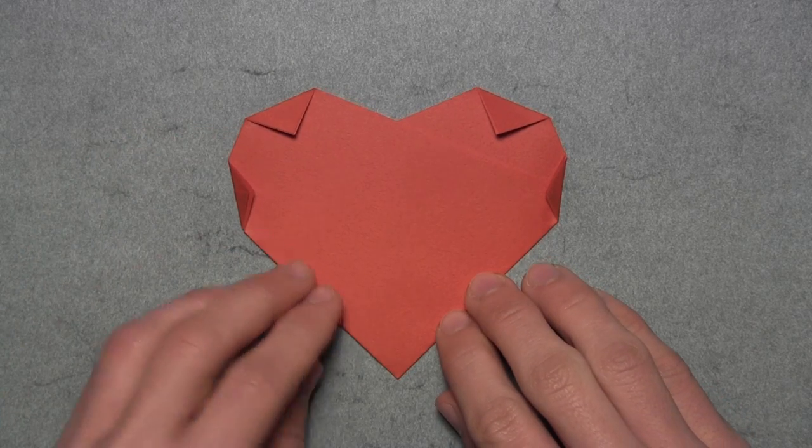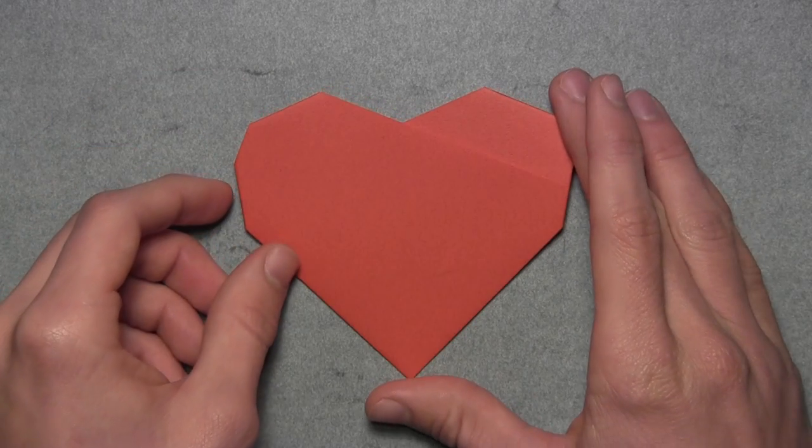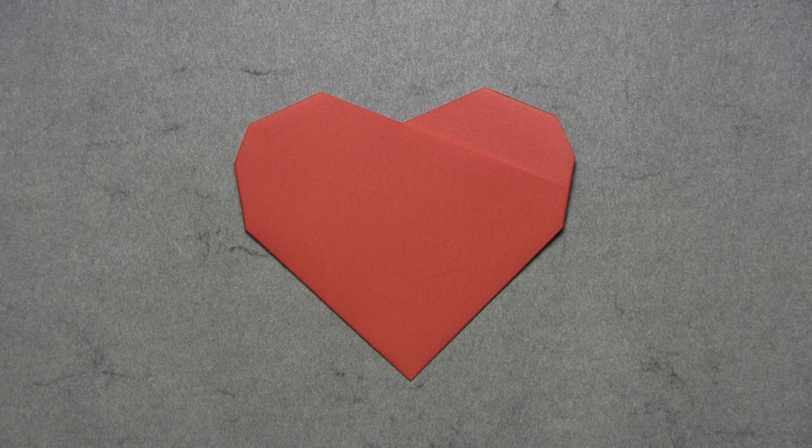Once you've done that on both sides, you can turn the model over and your origami sixfold heart is complete.